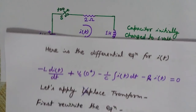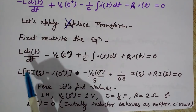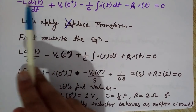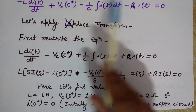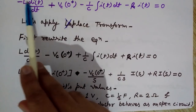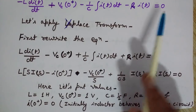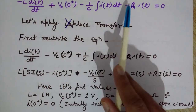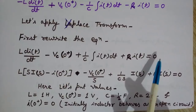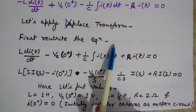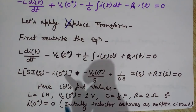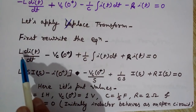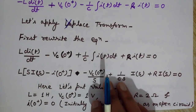Now we rearrange this equation. Multiply both sides by negative one — or just change the signs on both sides. This gives us the rearranged form of the equation. Now we will apply the Laplace transform to this differential equation.